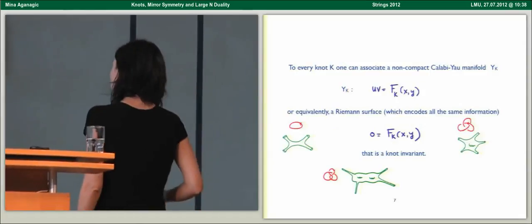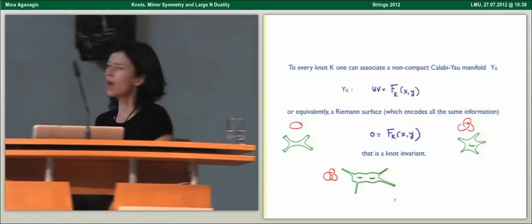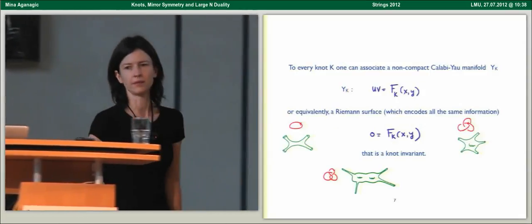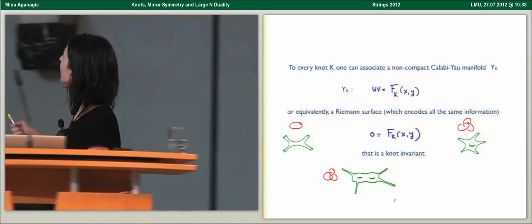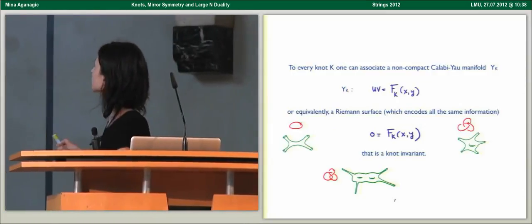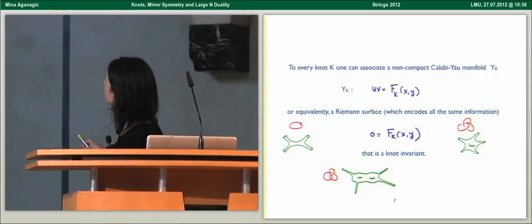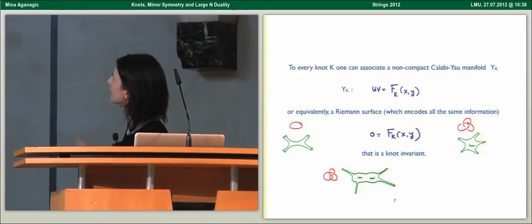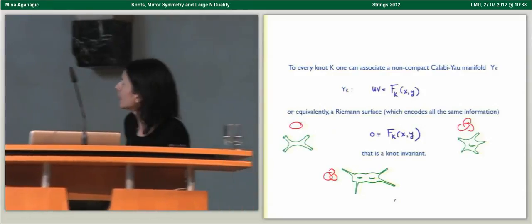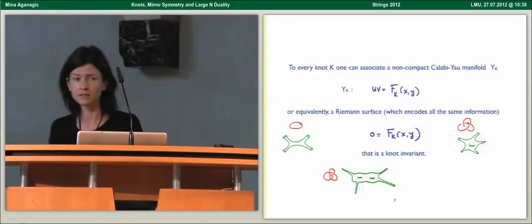What happens is that to every knot one can associate a Calabi-Yau manifold, given by a hypersurface equation or equivalently by a Riemann surface. These two equations encode the same amount of information, and the claim is that this Riemann surface is a knot invariant.